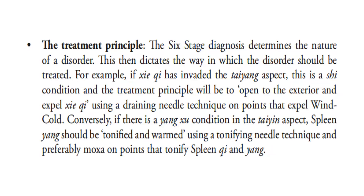Now let's go to the treatment principle. The six stages diagnosis determines the nature of a disorder, which then dictates the way in which the disorder should be treated. For example, if pathogenic qi has invaded the Taiyang aspect, this is an excess condition and the treatment principle will be to open to the exterior and expel pathogenic qi using a draining needle technique on points that expel wind cold. Conversely, if there is a yang deficiency condition on the Taiyang aspect, spleen yang should be tonified and warmed using a tonifying needle technique and preferably moxa on points that tonify spleen qi and yang.